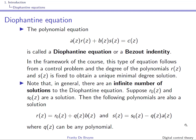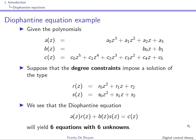The Diophantine equation will also be encountered in the course of my colleague Thomas Museur on Model Predictive Control, and in next year's course of System Identification. Let us take an example. The polynomials that are known are A, B, and C: A is a third order polynomial, B a first order polynomial, and C is a fifth order polynomial. The two unknown polynomials are R and S, and here they are both of degree two. In reality, the degree constraint comes from the RST control problem.